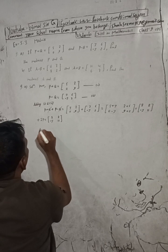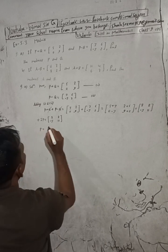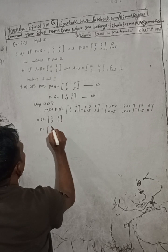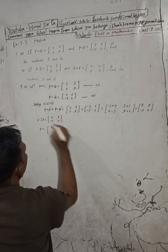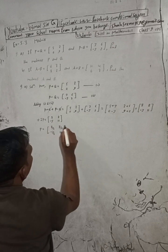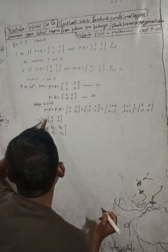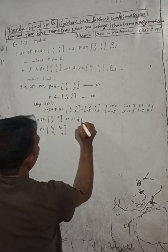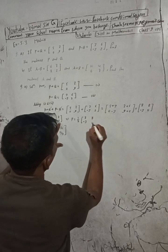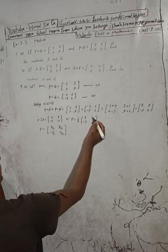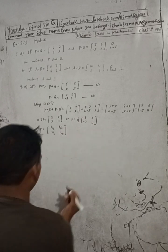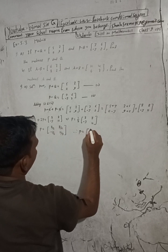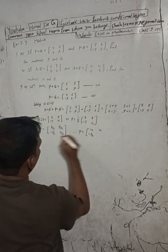This implies P is equal to — divide by 2 — so this will be: 8 by 2, 8 by 2, minus 3 by 2, 11 by 2. So P equals one-half times [8, 8; minus 3, 11], which gives P equal to [4, 4; minus 3 by 2, 11 by 2].